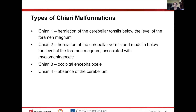Chiari 1 was described as herniation of the cerebellar tonsils below the level of the foramen magnum. Chiari 2 was herniation of the cerebellar vermis — that midline structure — as well as the medulla below the foramen magnum, predominantly seen in patients with myelomeningoceles. Chiari 3 was an occipital encephalocele, and Chiari 4 was complete absence of the cerebellum.